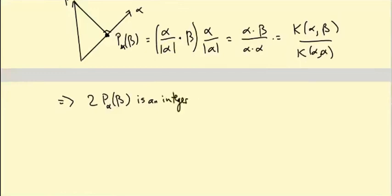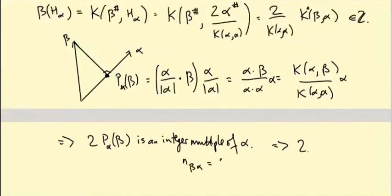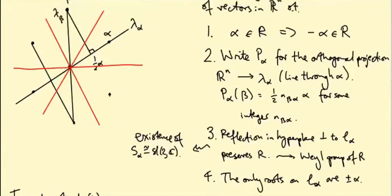And what we're saying is two times that is an integer. So this says two times P_alpha beta is an integer multiple of alpha. So that proves axiom two where we take N_beta_alpha to be this integer multiple, which is 2K(alpha, beta) over K(alpha, alpha).